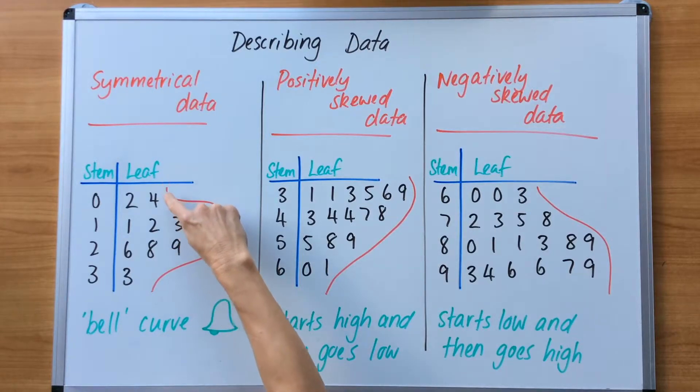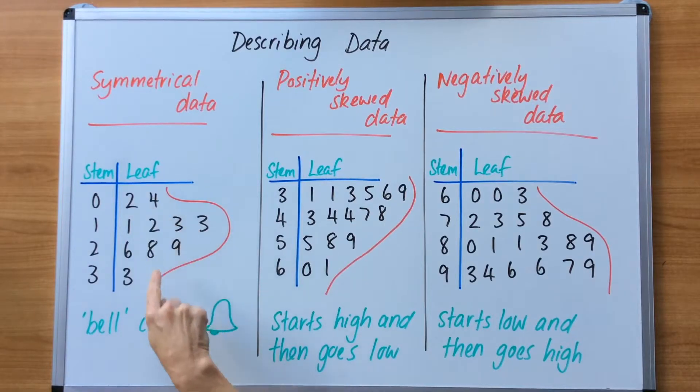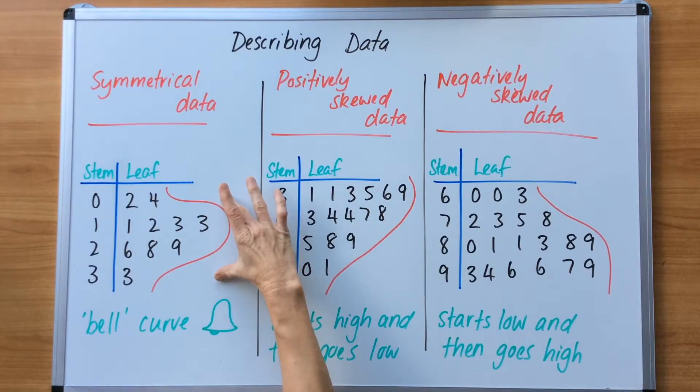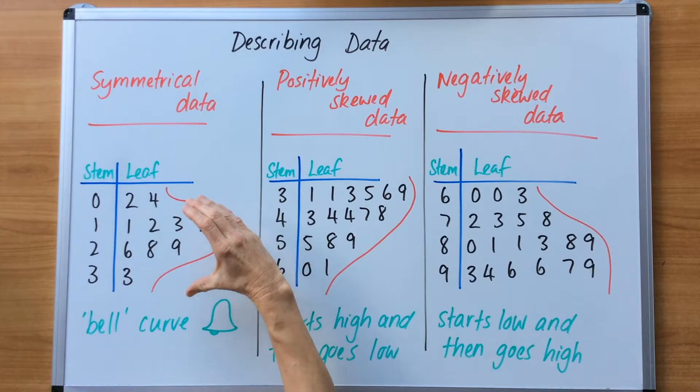You can see it starts off low, gets really high in the middle, and then goes low again. This is like a bell curve, like Christmas bells or church bells. It's low on both ends and high in the middle. Through the center of the data, it gets really high.